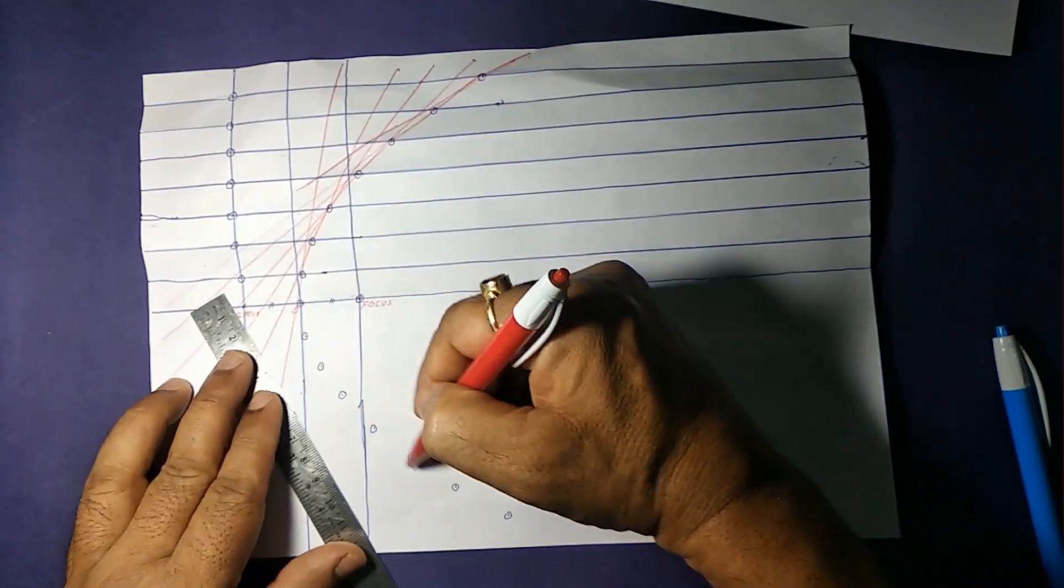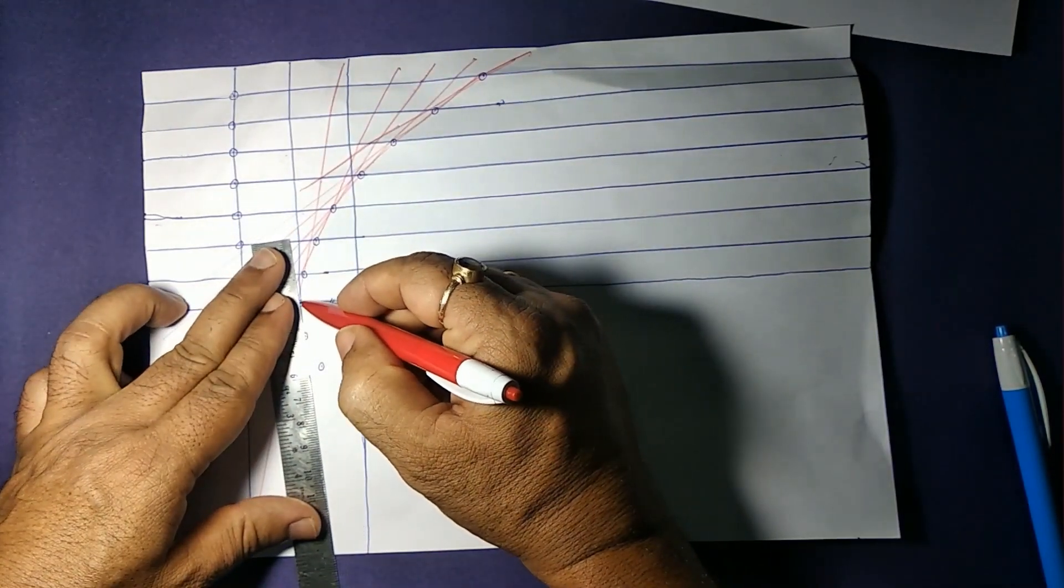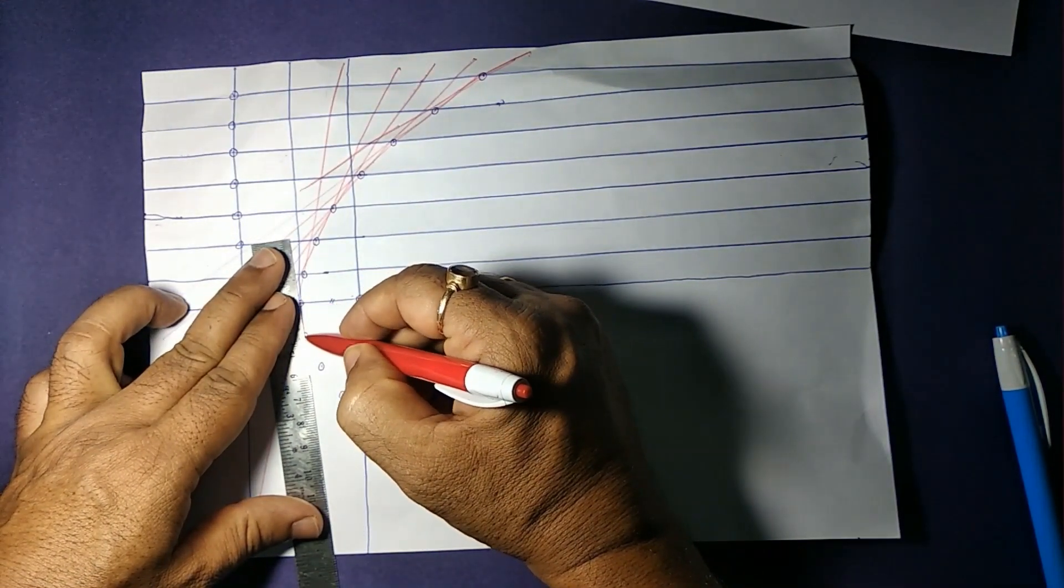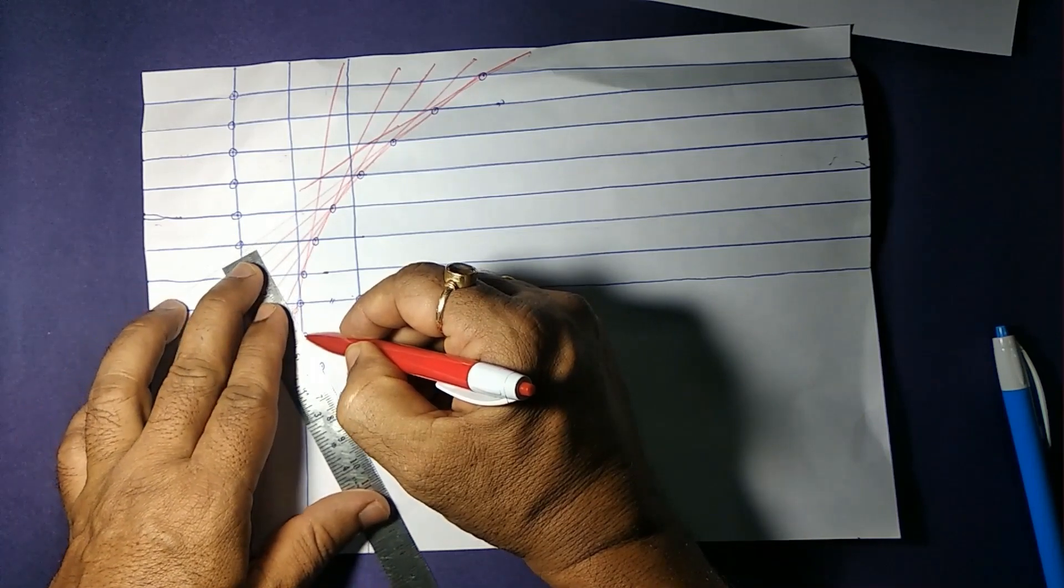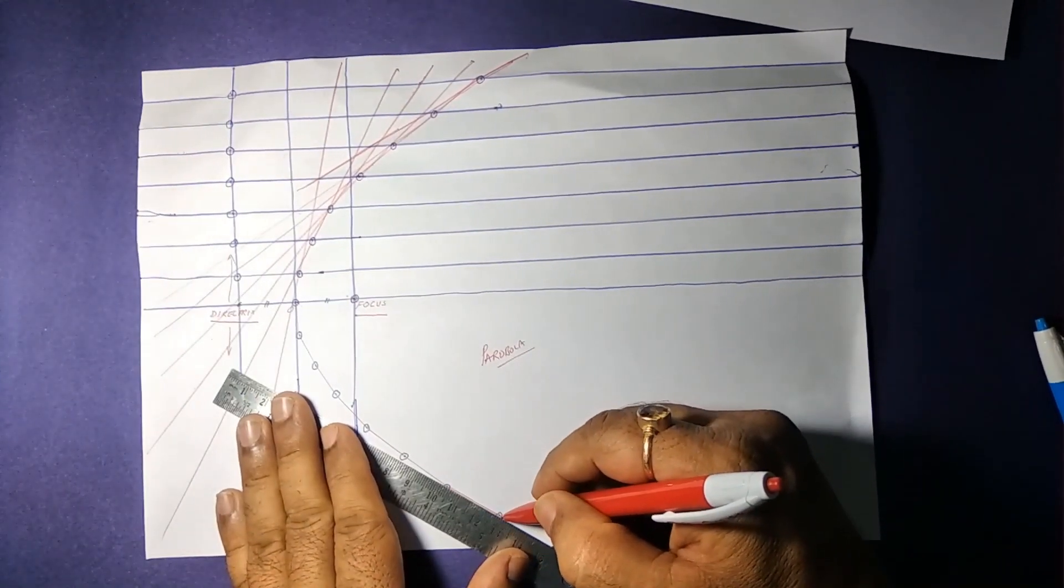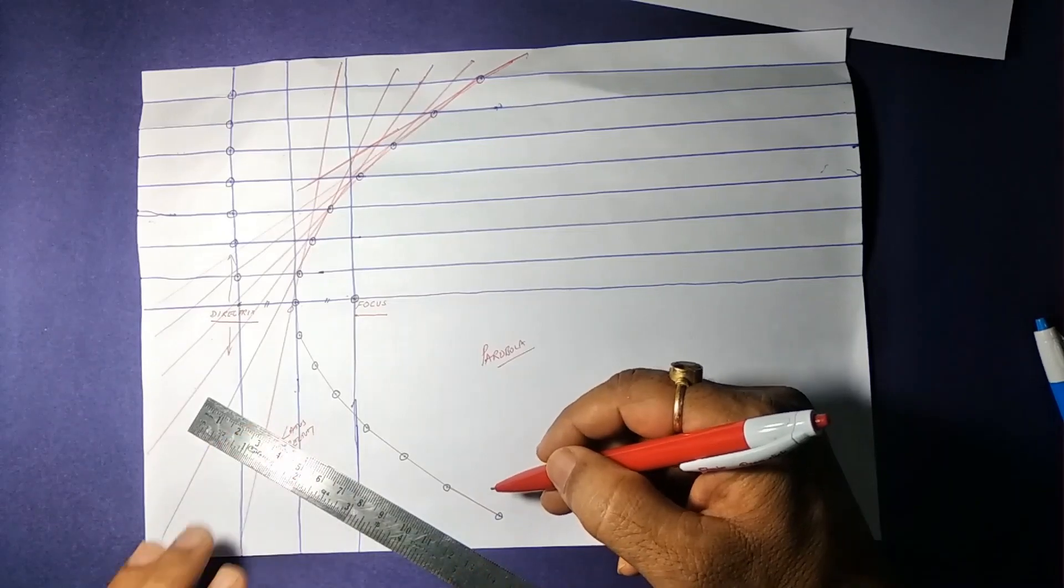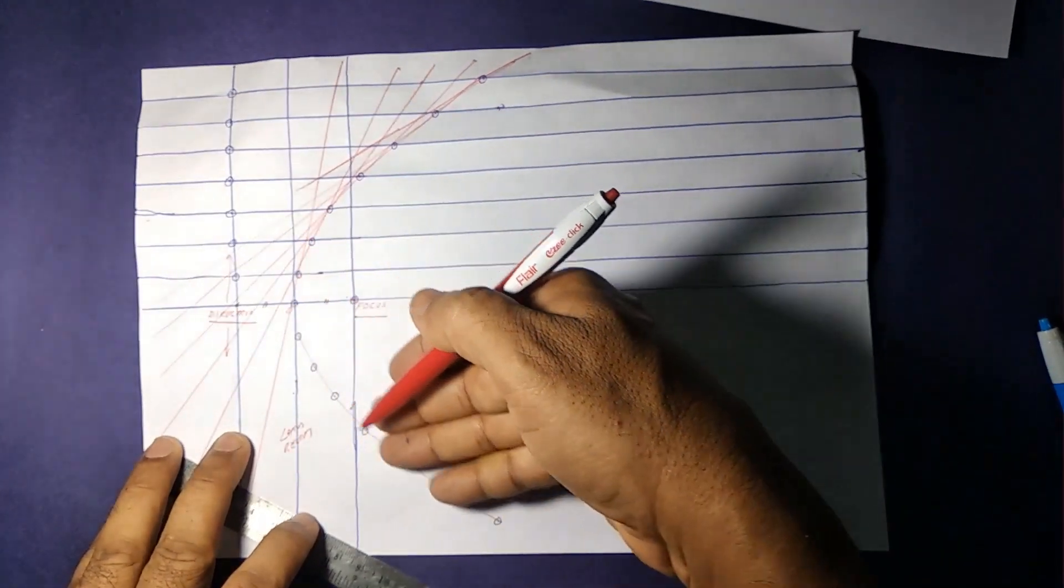Let us mark them to make it visible. And this is the parabolic shape.